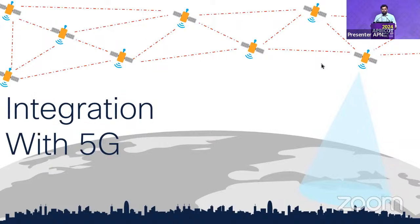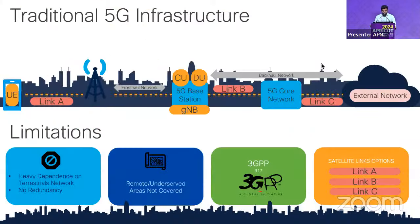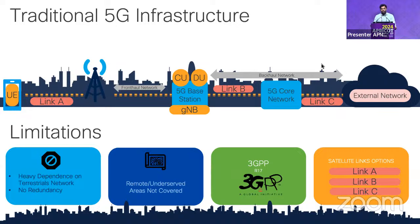Now let's look at integrating satellite technologies with 5G infrastructure. In traditional 5G, user equipment talks to a local cell, fronthauled to a gNB (5G base station), then to the core network. Satellite links can be options at multiple points — A, B, and C in the architecture. Current 5G limitations include heavy dependence on terrestrial networks, no redundancy, and coverage gaps.